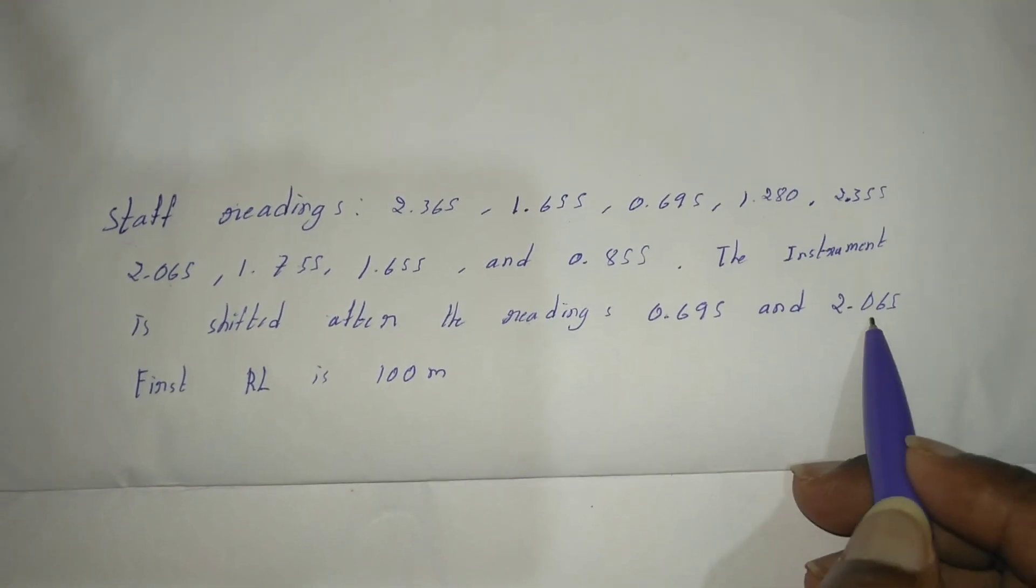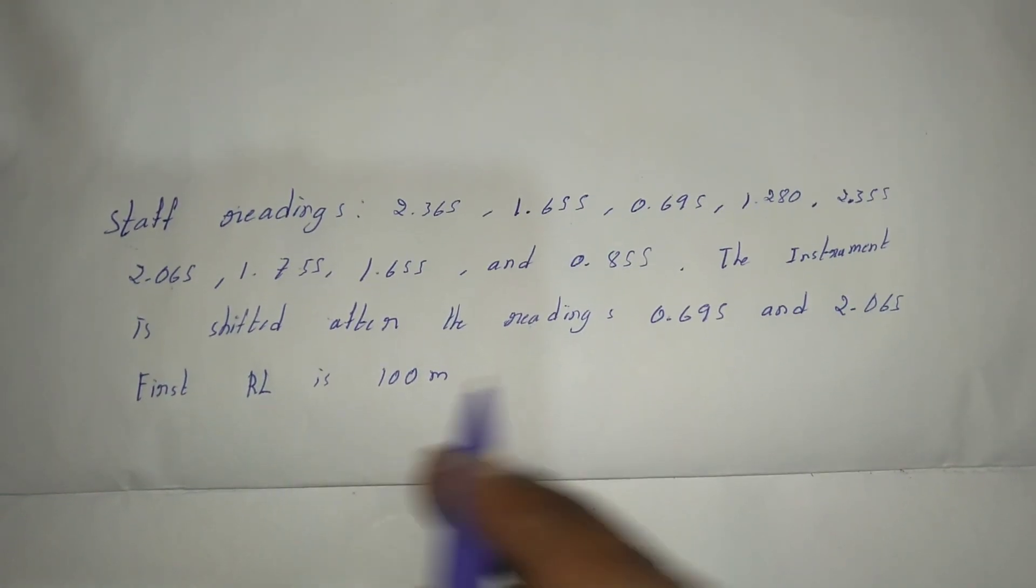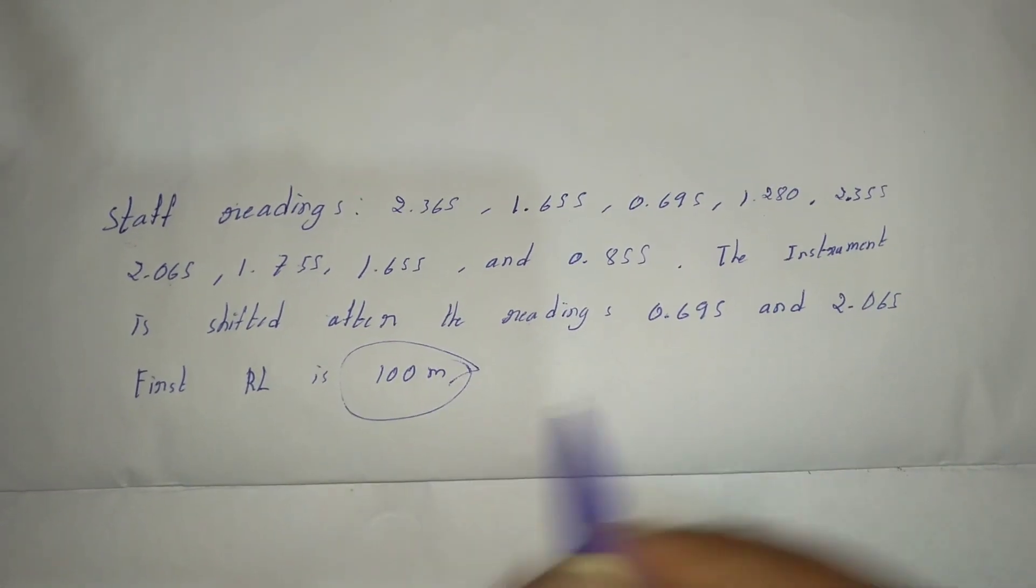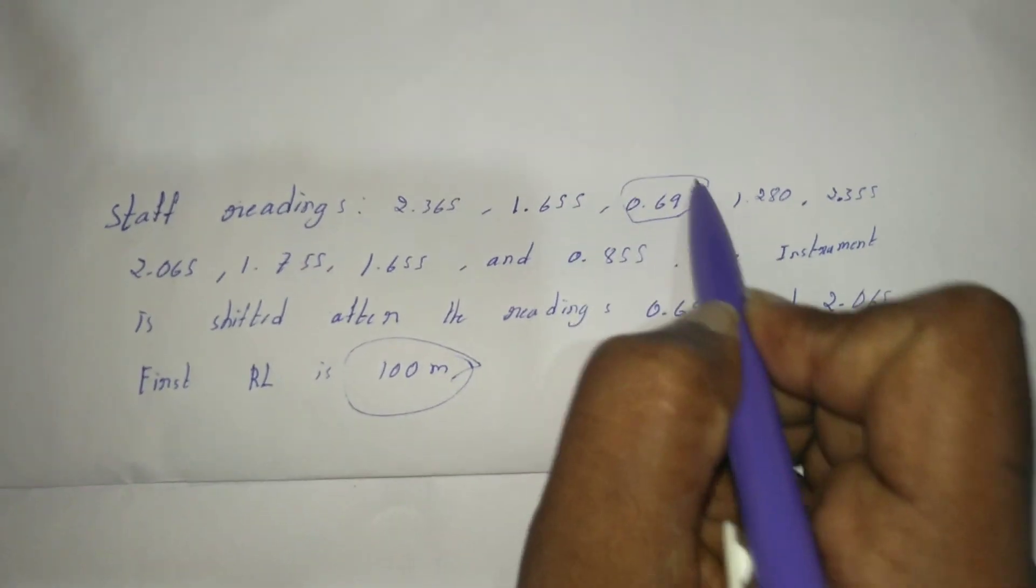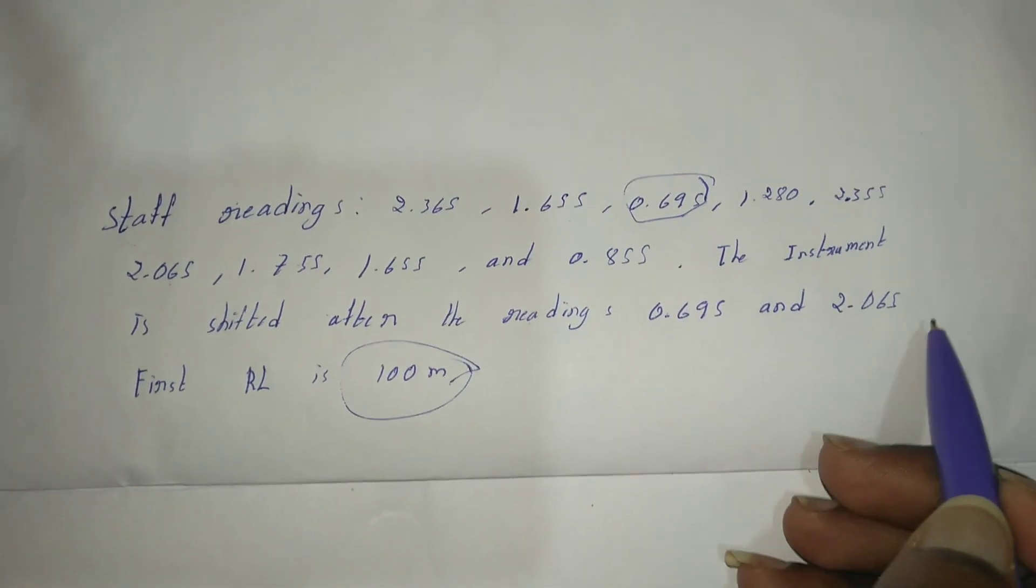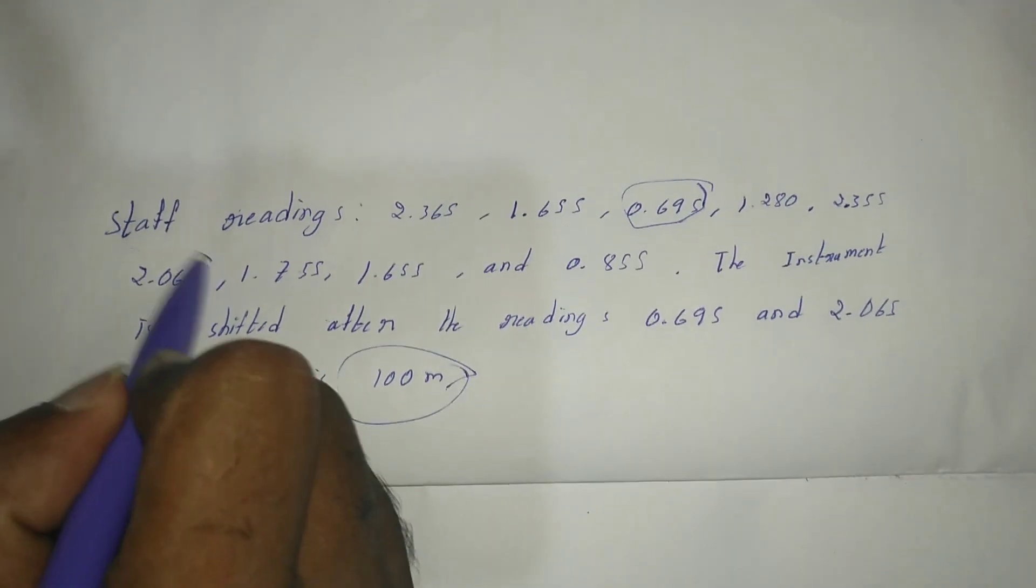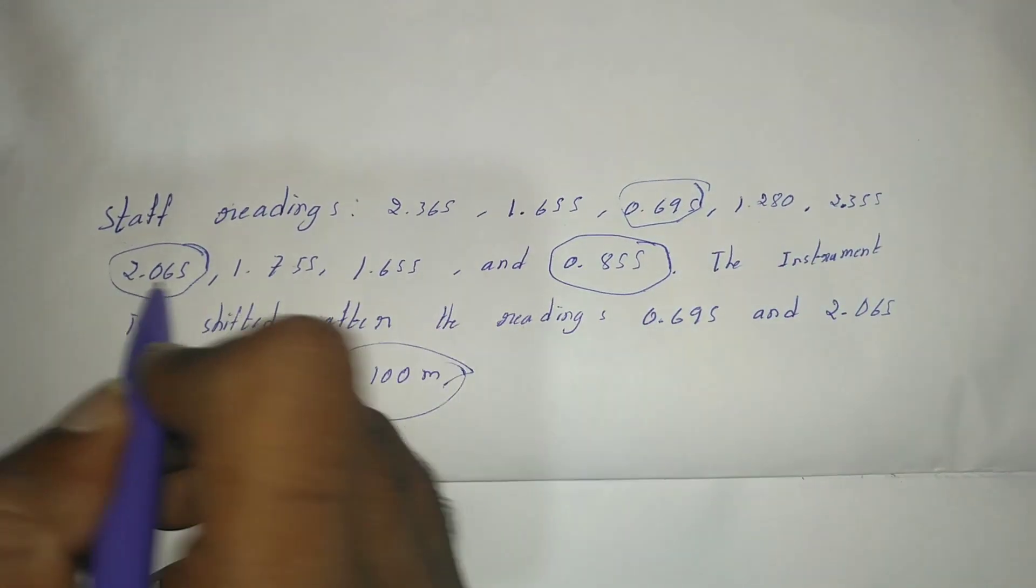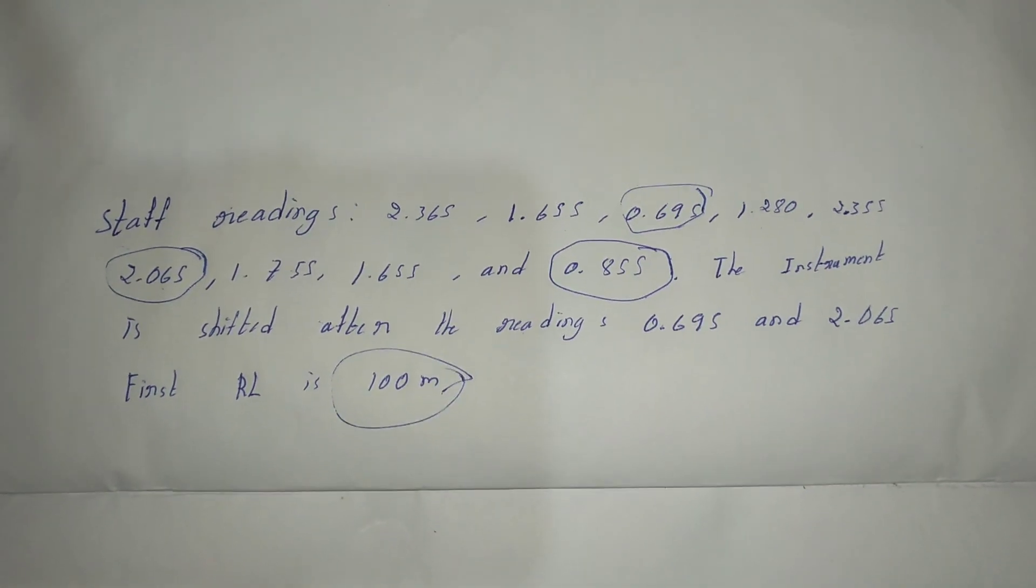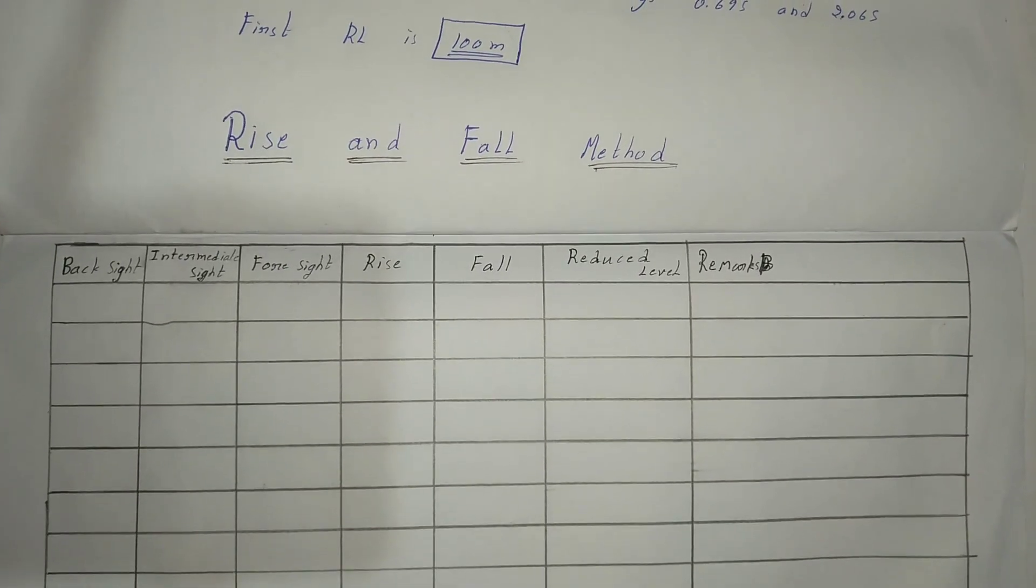The instrument is shifted after the readings 0.695 and 2.065. The first area is 100 meters. Let's find the reduced levels using the rise and fall method.